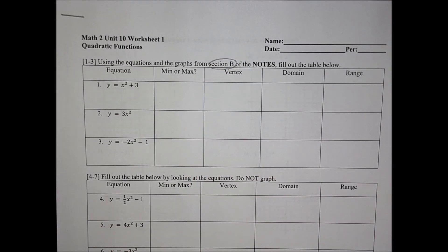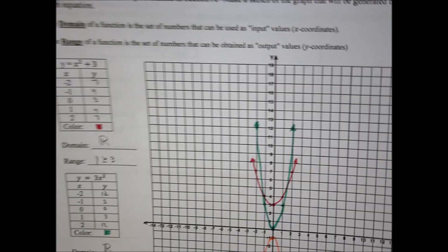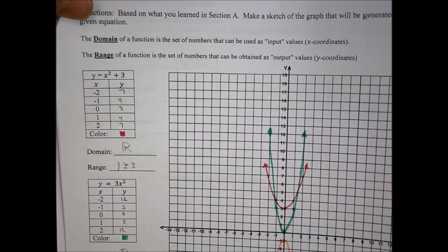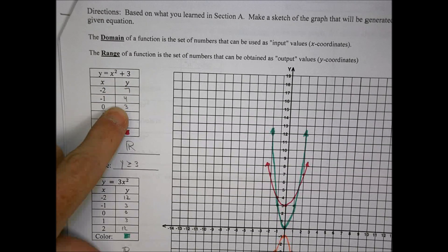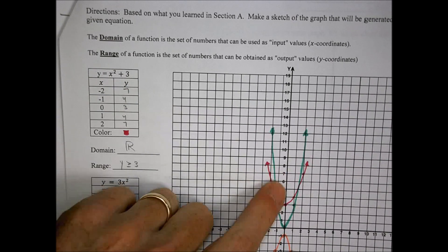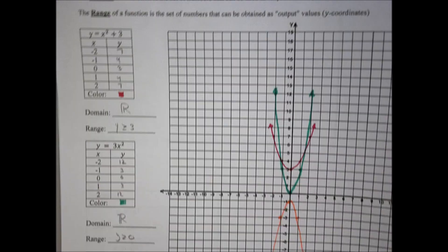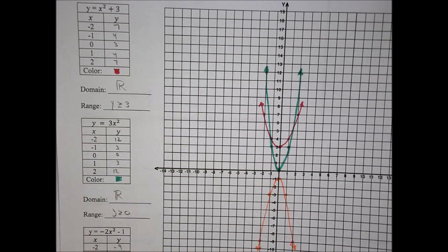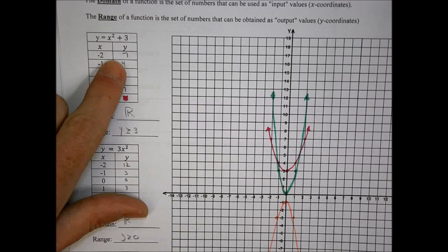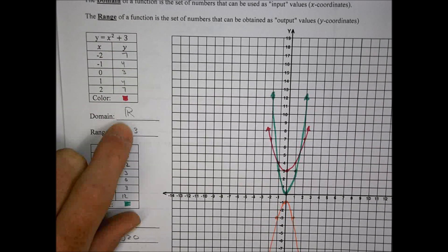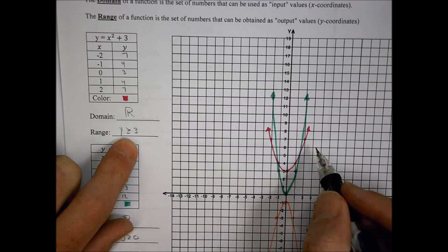When you used your notes the other day, you were first doing a Desmos activity. Then in section B, it had an activity where it did not want you to use your notes. Instead, it provided you with a table and a quadratic function that you then plotted out some points, and then went to plot them on the graph using a variety of colors to show what that would look like. For example, you had x squared plus 3, and you put in some points — I made kind of a pinkish color — and you looked at what the domain and range values were and graphed that out.